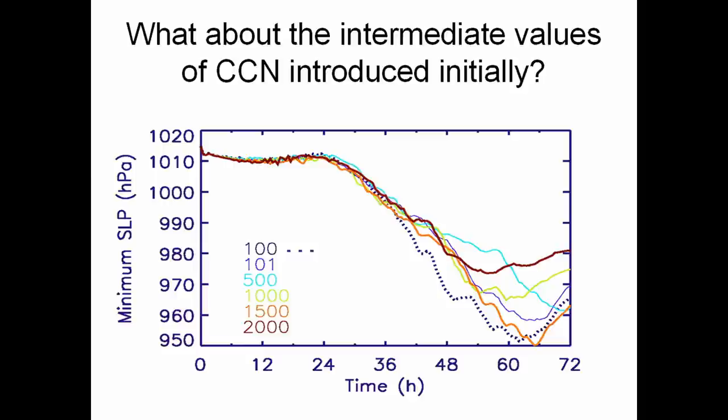The 101 per cc curve basically followed the 100 very closely, but as you got further in time, you start seeing departures where secondary rain bands and spiral rain bands are forming. So all the response occurs after the storm has evolved spiral rain bands. The results aren't quite as nice as I originally thought.